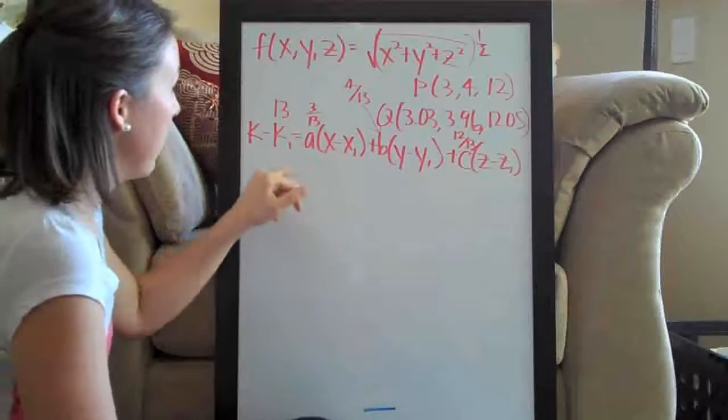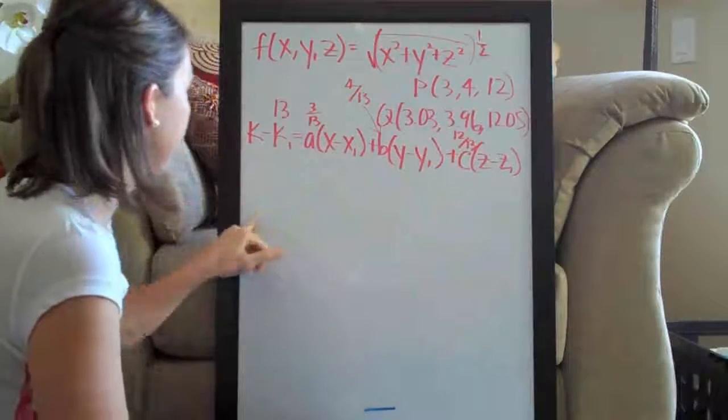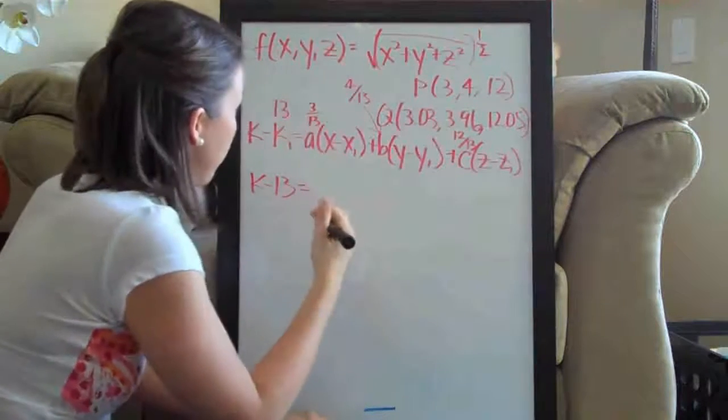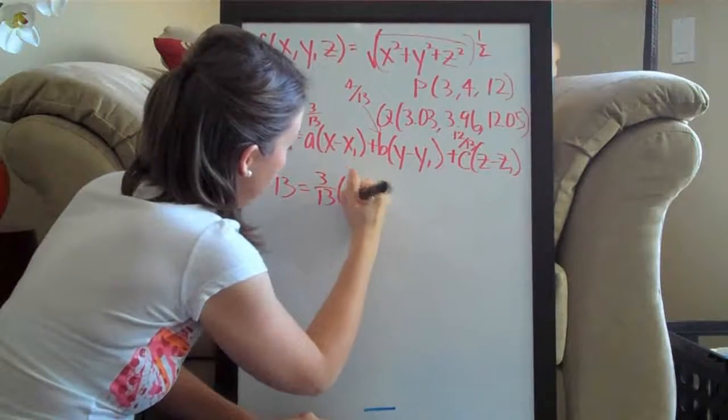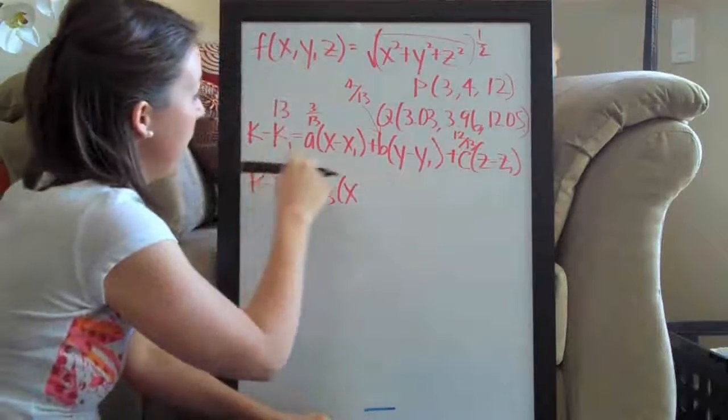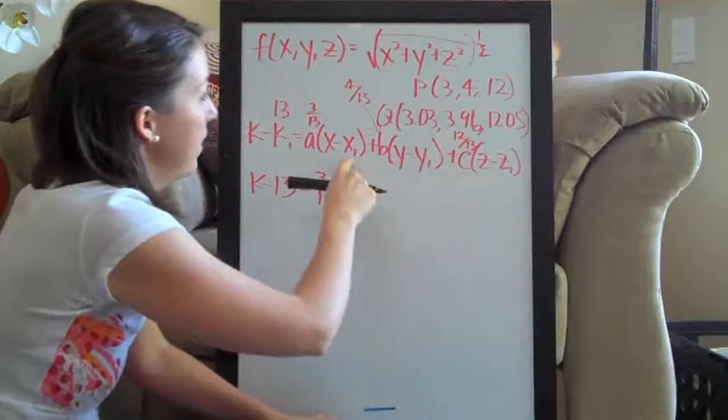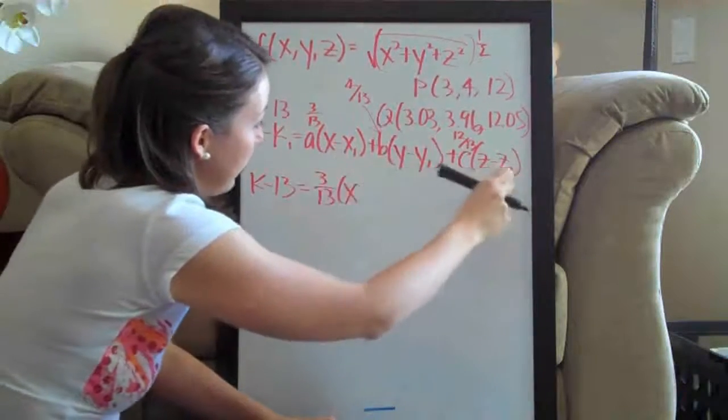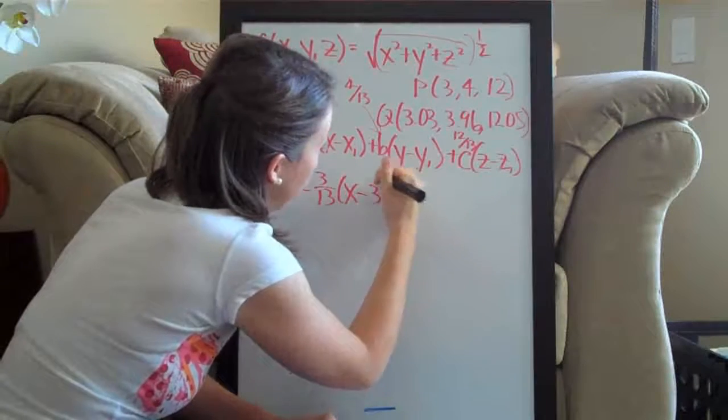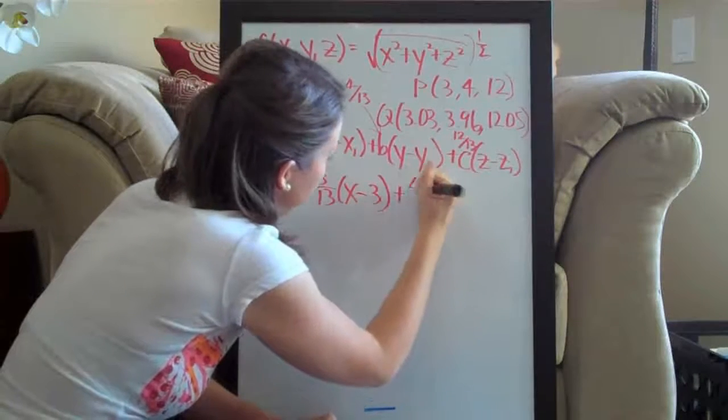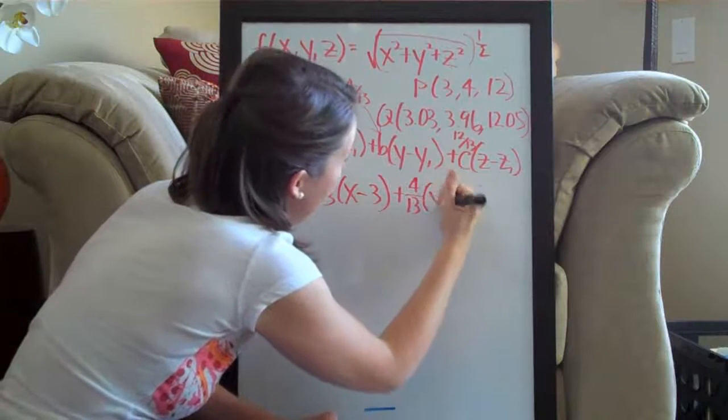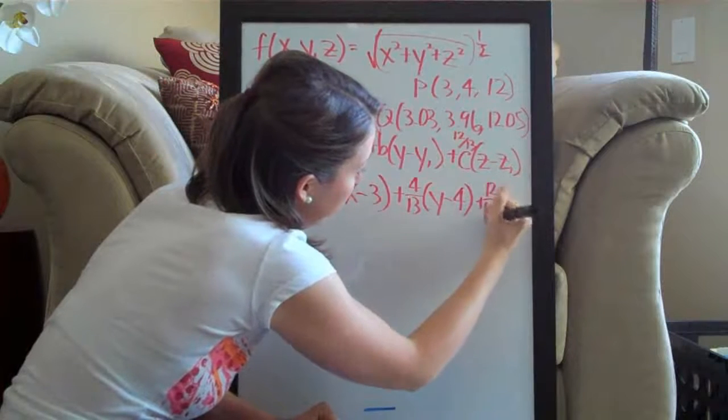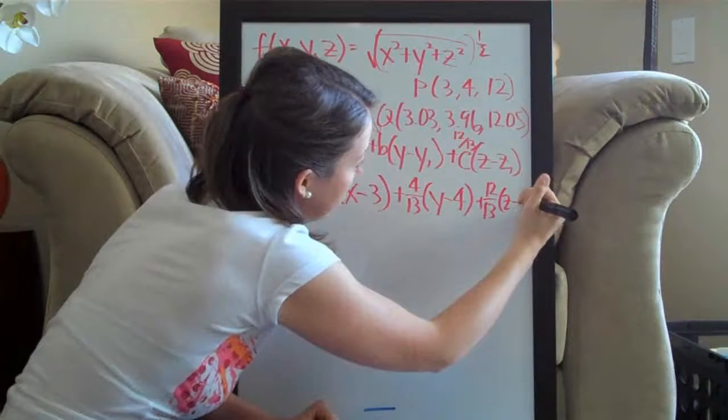Now we can write out the entire equation. So we're going to have k minus thirteen equals three over thirteen. We're going to leave k, x, y, and z intact, and we're going to plug in the point three, four, twelve for x, y, and z here. So x minus three plus four over thirteen times y minus four plus twelve over thirteen times z minus twelve.